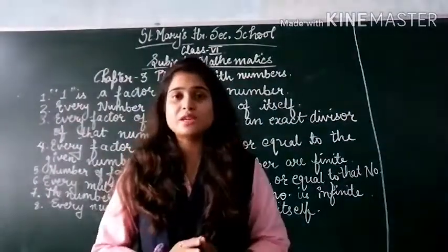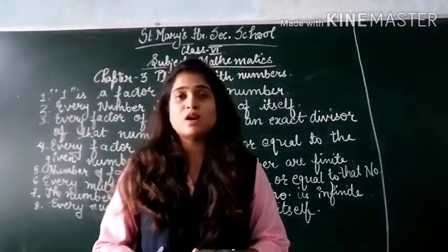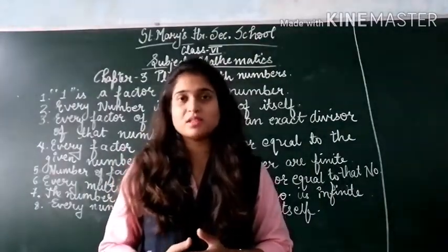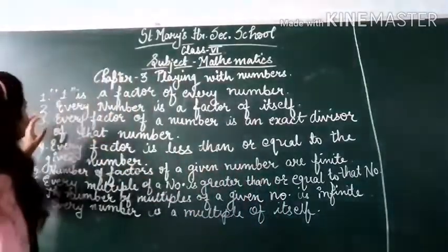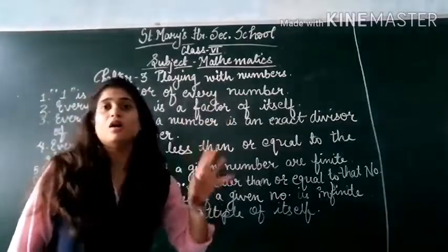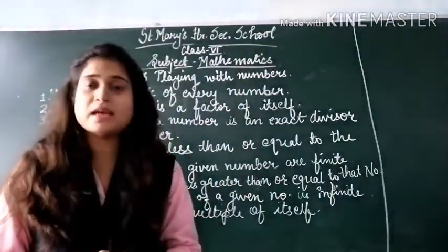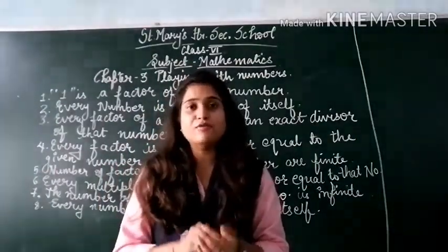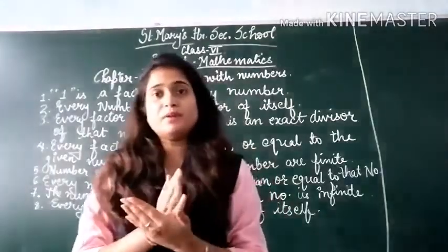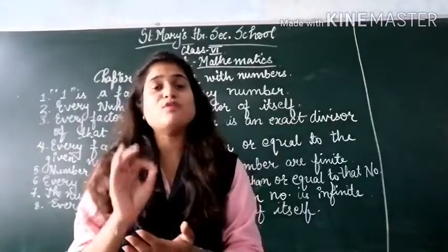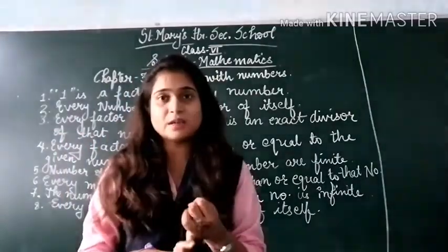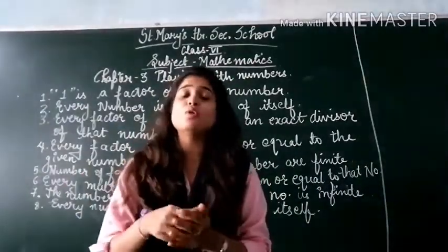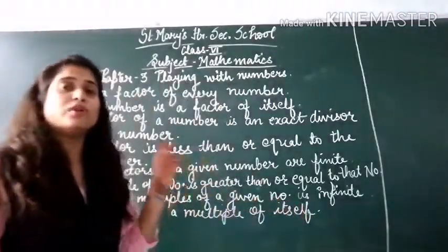Hello students. In our last video we have seen what are factors and multiples. Let us now see some facts about factors and multiples — what we can conclude about them. The first point is: 1 is the factor of every number. In every number, 1 is the divisor. Suppose 12 is the number, then 1 will be the divisor of 12. Suppose 13 is the number, then 1 will be the divisor of 13. So, 1 is a divisor of every number, or 1 is a factor of every number.